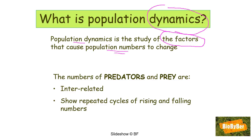Before we can study these factors, we have to appreciate the fact that the numbers of predators and prey are interrelated. Remember: prey are the organisms getting eaten. They also show repeated cycles of rising and falling numbers, and this pattern is best understood by looking at a graph.